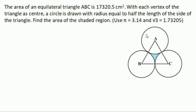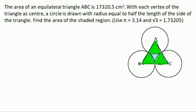We find the shaded area as: area of triangle minus area of 3 sectors. The triangle is equilateral, so all angles are 60°. Therefore theta = 60° for each sector. There are 3 sectors of equal area — one at vertex A, one at B, and one at C — shown in green in the figure.